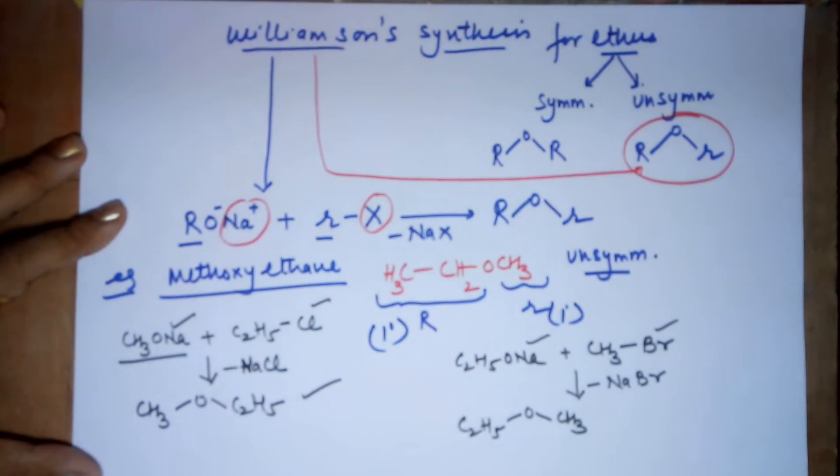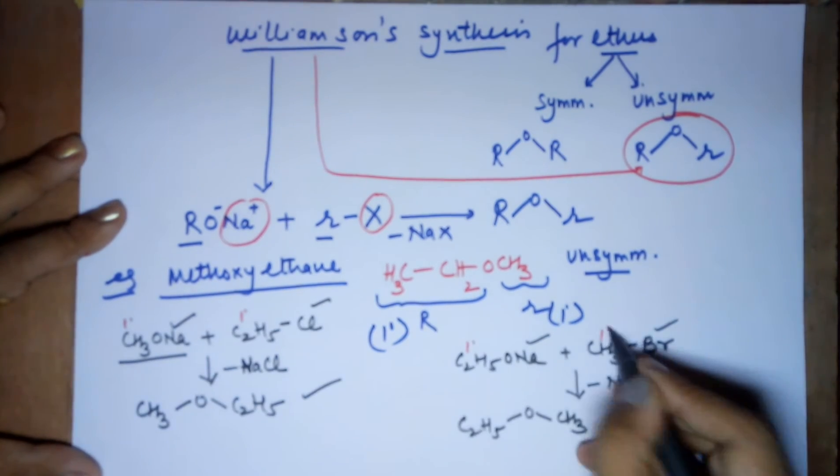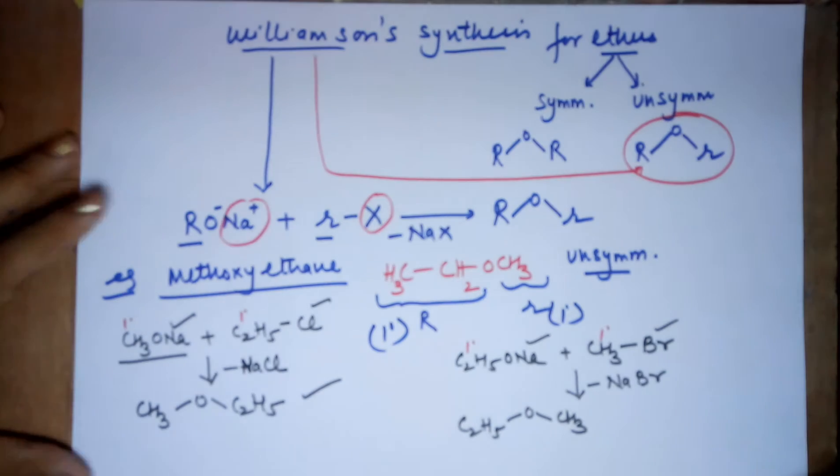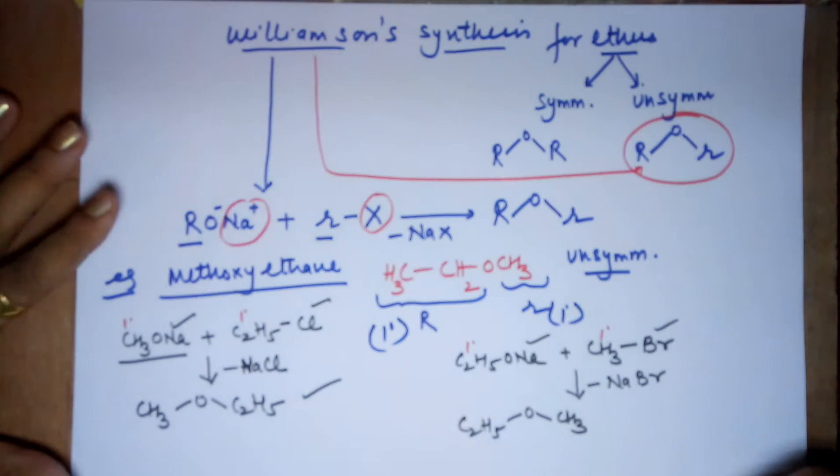So both the methods are correct. The reason being, your both R-groups are 1 degree. So there is no worries. Any method can be used. You can take any of the R-groups as halide and any of them as sodium alkoxide.